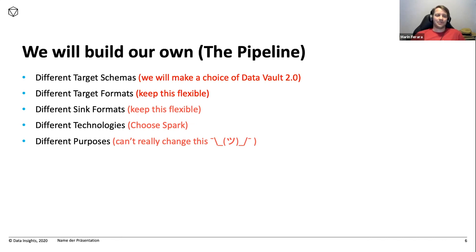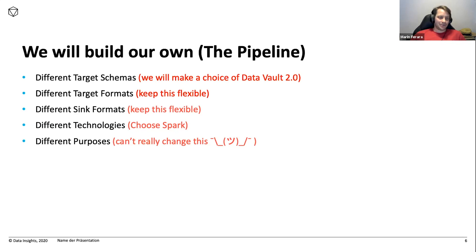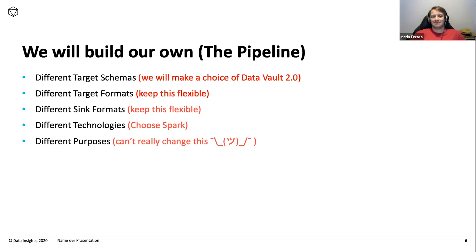We want to keep target formats flexible — you can always switch from Delta Lake to whatever comes next. In terms of technologies, we chose Spark because we want to handle big data. There are different purposes involved, and you have to make some modifications for that.